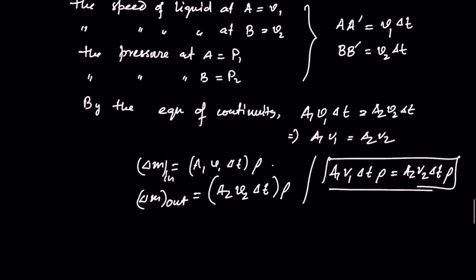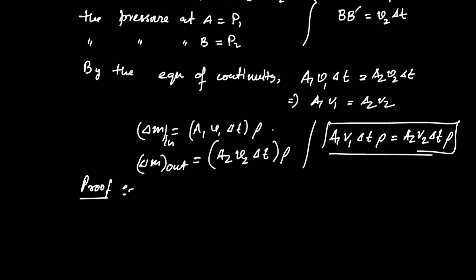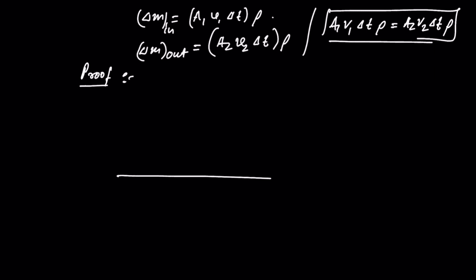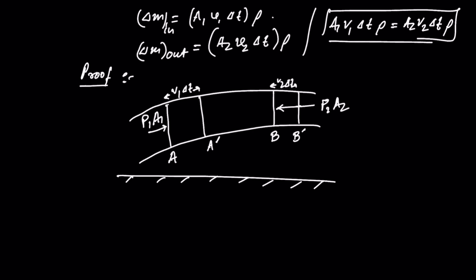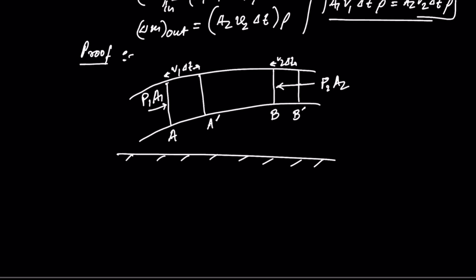Now about the proof — let me redraw the diagram. Here is my reference level. Here at point A, the fluid has entered up to A-dash, a distance of V1·delta T. The force here is P1·A1. At point B, the outgoing fluid in time delta T extends to B-dash, a distance of V2·delta T. The force upon it is P2·A2.